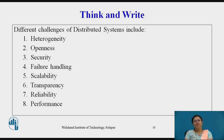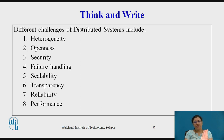Heterogeneity: distributed systems are heterogeneous in nature, so coordination and resource sharing can be difficult if proper protocols or policies are not in place. For openness, making the network easier to configure and modify is one of the challenges. Security is a big challenge in a distributed environment, especially when using public networks. For failure handling, it could be tough when the distributed model is built based on unreliable components.